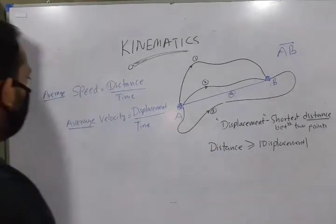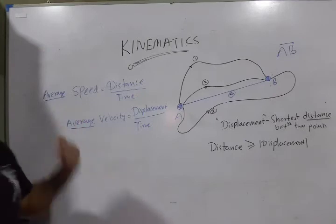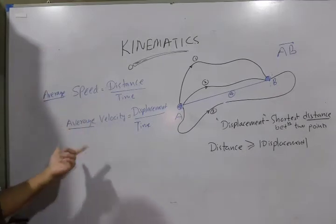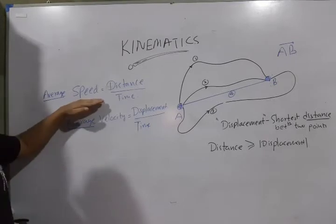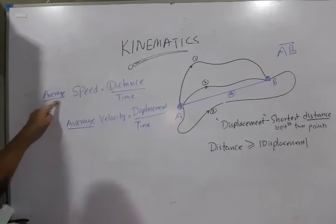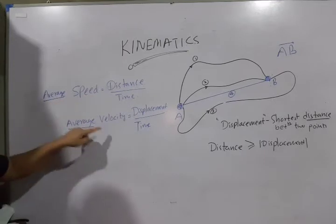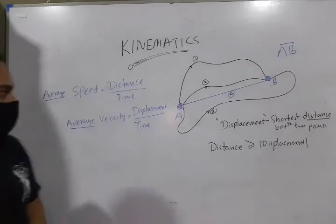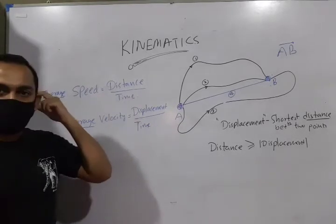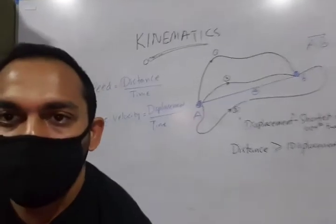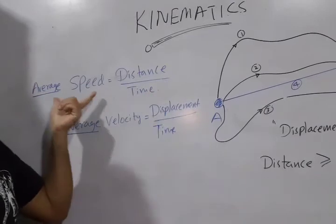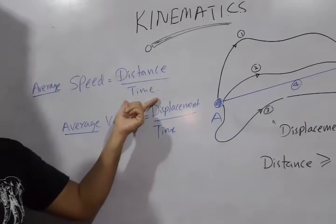Now that we know about displacements and distances, we will move into speed and velocity. So, under speed and velocity, we will define this entity called average speed. You can see here that I have underlined average path, average speed and average velocity. So, average speed is the distance divided by time.